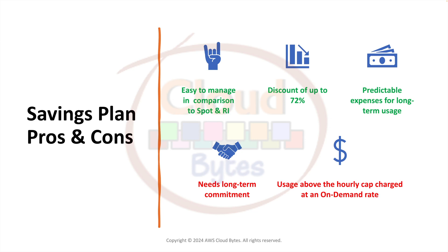The next pricing model is savings plans. A savings plan is a flexible pricing model offering discounts on EC2 instances, Lambda, and Fargate for a one or three year commitment. The commitment is measured in a fixed price per hour and offers up to 72% discount. It is easier to manage in comparison to spot instances and RIs.